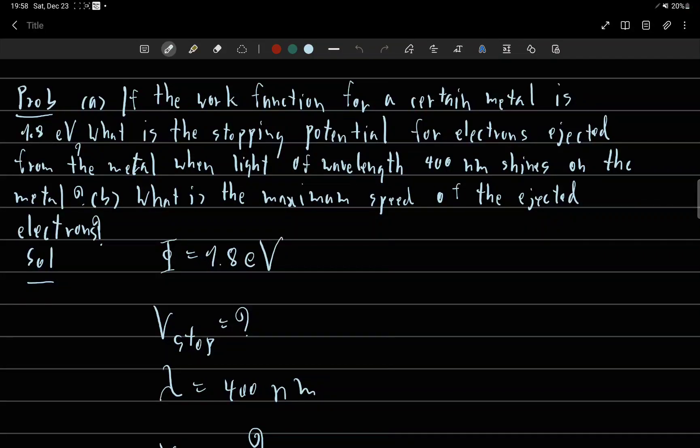If the work function for a certain metal is 1.8 electron volts, what is the stopping potential for electrons ejected from the metal when light of wavelength 400 nanometers shines on the metal? And part b, what is the maximum speed of the ejected electron?